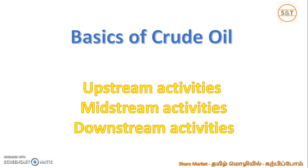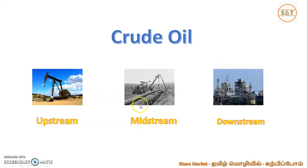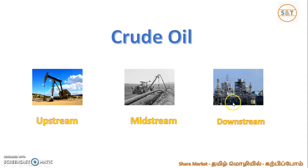The 3 steps are upstream, midstream, and downstream. You can see the complete process. The first step is upstream, the second step is midstream, and the third is downstream. Downstream products are called petrol and diesel.